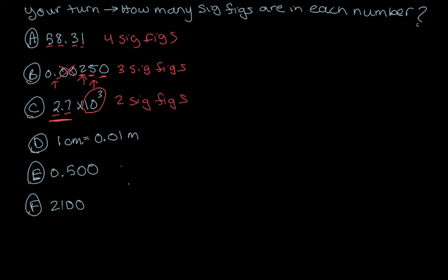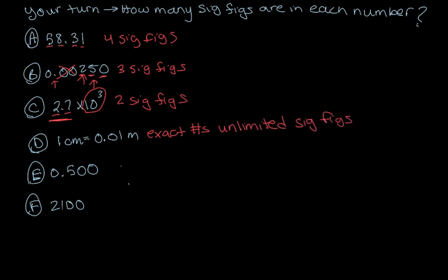Here we have a conversion factor: one centimeter is equal to 0.01 meters, and this is exact. When we learn about the metric system, we'll learn that one centimeter means exactly one one-hundredth of a meter. Exact numbers have unlimited significant figures — there is no uncertainty.